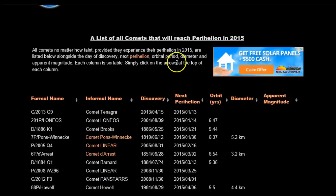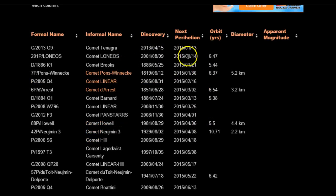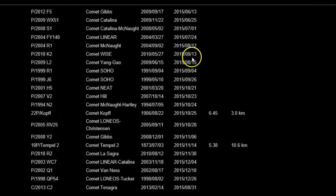At the bottom of that page, these are all the ones they expect in 2015. If we go down here to August, August 13th, there's the P2010K2, and the 15th, P2009L2. In September, we have P1999R1, September 4th, and September 26th, which is in that same time frame as the last two weeks of September, we have P1999J6. That's the date when they will make their closest approach to the Sun, orbiting around the Sun.